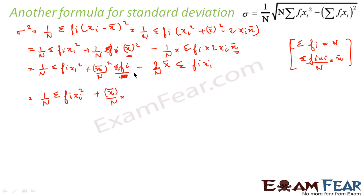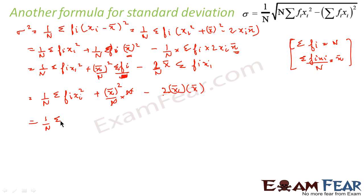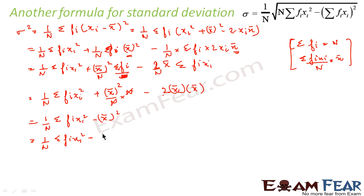This simplifies: sigma fi is n, so that term becomes mean squared, and we have minus 2 mean into sigma fi·xi by n, which is also mean. So what we get is 1 by n into sigma fi·xi squared, plus mean squared, minus 2 mean squared, which gives us minus mean squared overall.